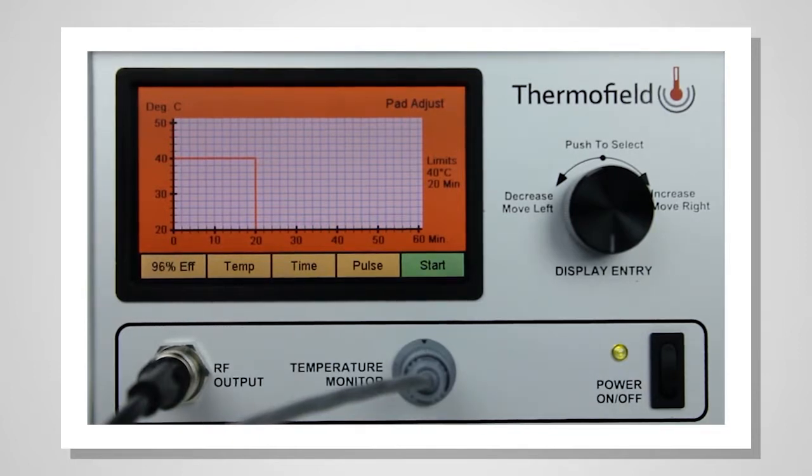At this point, the unit is allowing low RF power to the applicator and measuring how much power is absorbed in the patient. If the applicator has not been applied to the patient, the pane will display 0% efficiency.